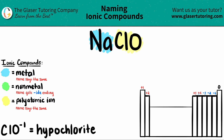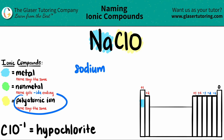Sodium is in group one, so we don't need a Roman numeral. Sodium is not a transition metal, but when we name ionic compounds the metal name always stays the same. So Na is sodium, and then ClO — the polyatomic name always stays the same.